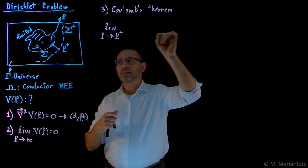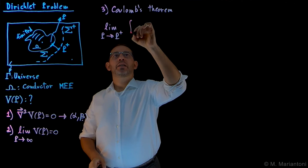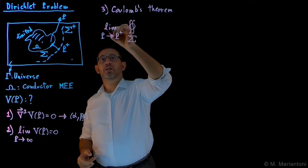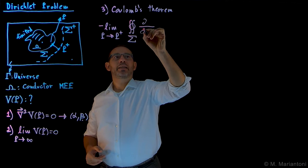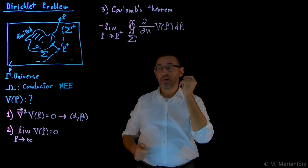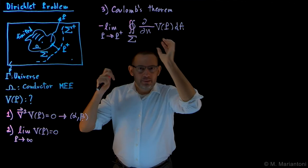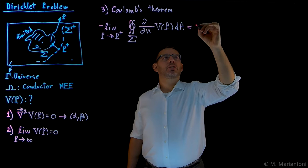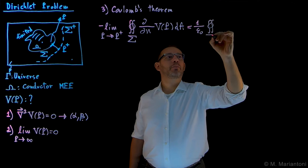Here comes the integral. We have the integral over the entire surface Σ. Since E equals minus the gradient of V, and I want to find something for the potential, I need to remember there is a minus sign. The gradient becomes the directional derivative with respect to N of V(P) dA. In the next video we will remind ourselves with an example what this directional derivative actually means. This quantity, since it comes from Gauss's theorem, has to equal 1/ε₀ times the surface integral on Σ of σ dA.